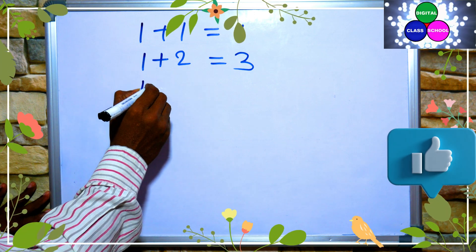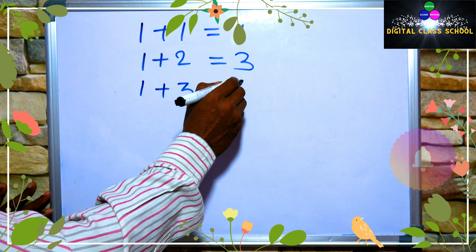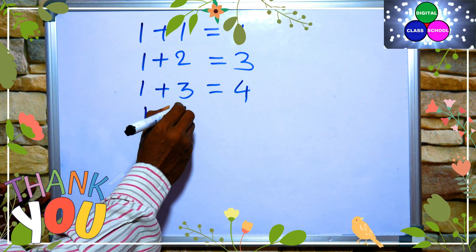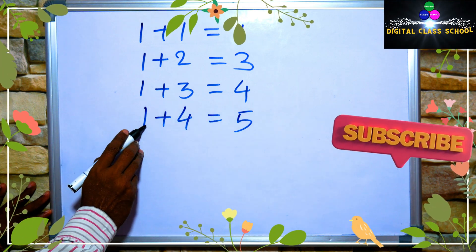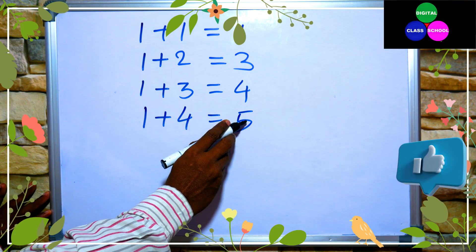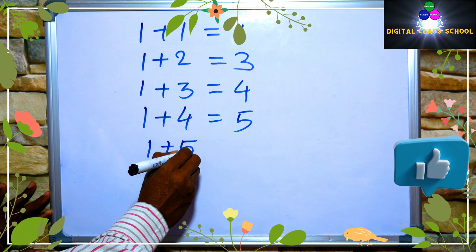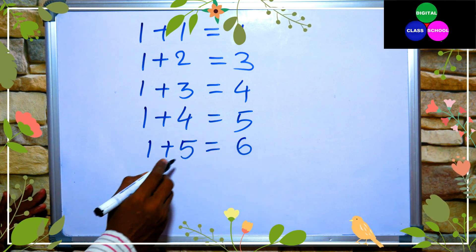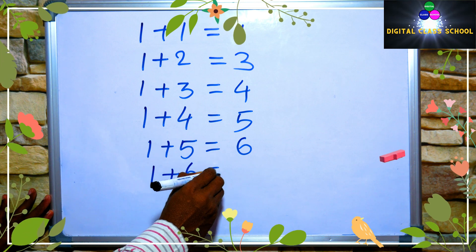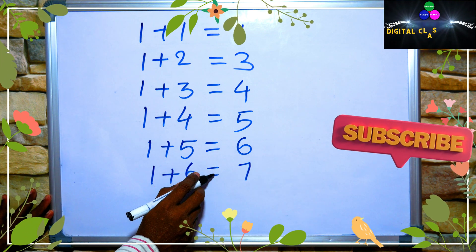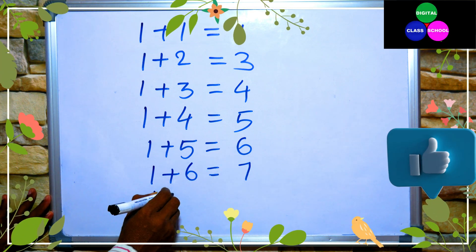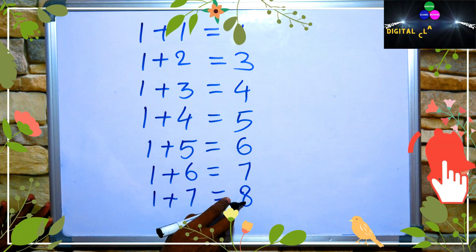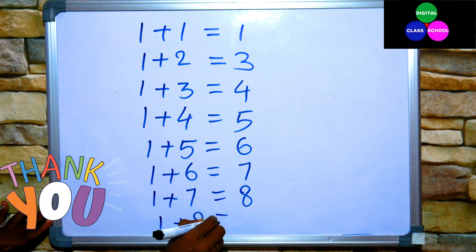1 plus 3 is equal to 4. 1 plus 4 is equal to 5. 1 plus 5 is equal to 6. 1 plus 6 is equal to 7. 1 plus 7 is equal to 8. 1 plus 8 is equal to 9.